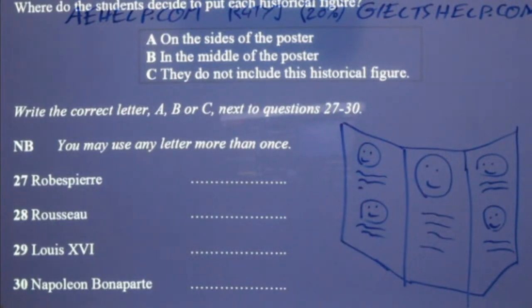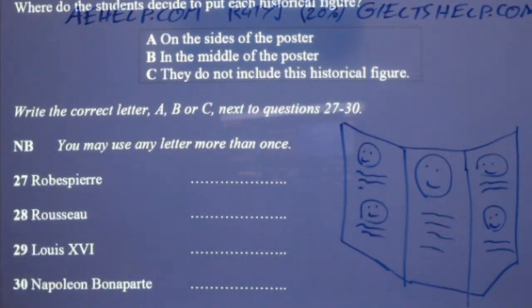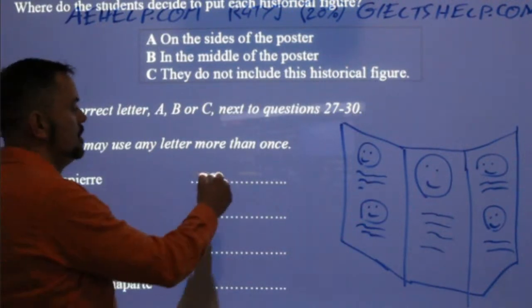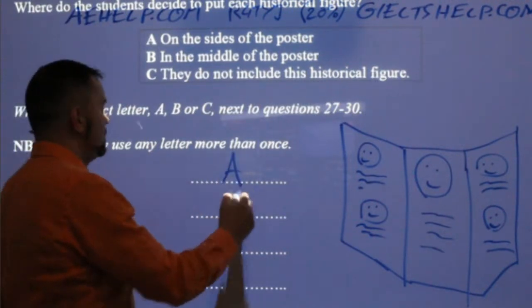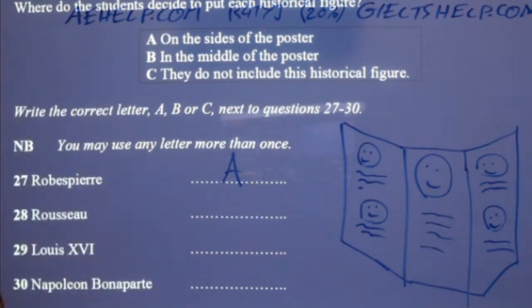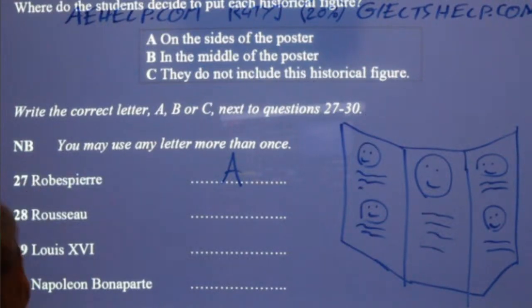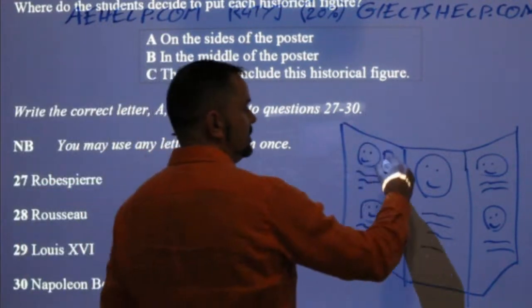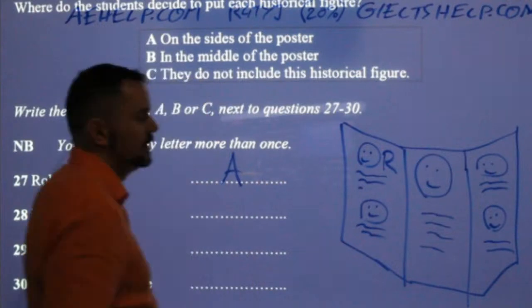So first one: Robespierre — on the sides of the poster. Very good. They mentioned Robespierre, they said he's pretty important, and Robespierre is going to be on the side.